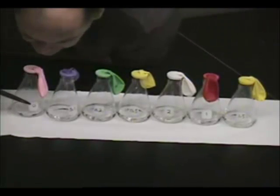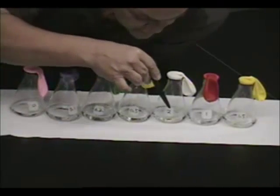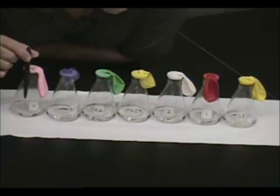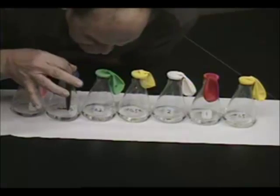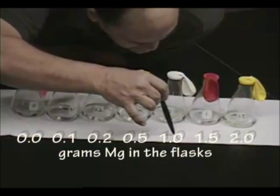Now the numbers you see on the fronts of the flasks are the masses of magnesium in each of the flasks. So we've got no magnesium in this balloon, a tenth of a gram here, two tenths of a gram, half a gram, one gram, one and a half, two grams.